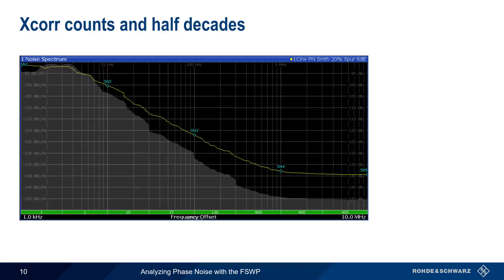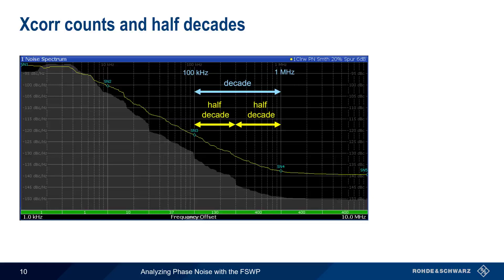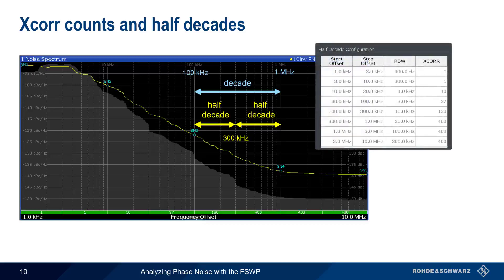Looking at this graphically: single sideband phase noise is plotted on a logarithmic scale, and a decade is simply the distance between orders of magnitude. A half decade is simply half of this distance. Since we're using a logarithmic scale, half the distance from 100 kHz to 1 MHz is 300 kHz, not 500 kHz. On the FSWP, we configure the number of cross-correlation counts for each half decade. For the first two half decades, only a single cross-correlation is done. The numbers in the green bar show the count per half decade — for example, 37 in the 30 kHz to 100 kHz range, and 400 cross-correlations for the three highest frequency half decades. Using different numbers of cross-correlations at different offsets increases efficiency and reduces measurement time.